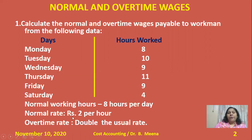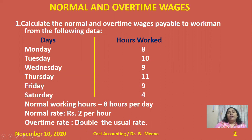The normal rate per hour is 2 rupees per hour. The overtime rate is double the usual rate. The usual rate is 2 rupees, so if any worker works more than the normal working hours, he is eligible to get double the usual rate — that is 4 rupees per hour — for each extra hour worked beyond normal working hours.